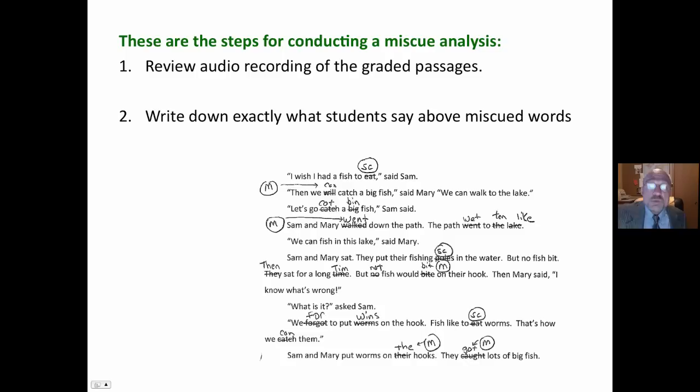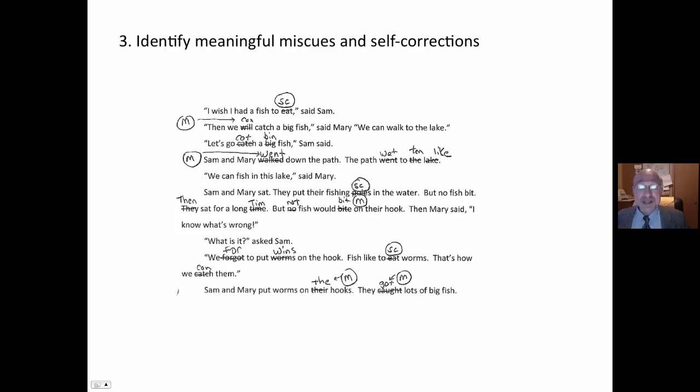And you can see that here. I'm writing down exactly what they say. When students self-correct, S-C circle. When the miscue is a meaningful miscue, I write an M and I circle back. And again, there's a variety of different ways to do this. I recommend a very simple way like this. And again, you see me identifying the miscues and the meaningful miscues and the self-corrections.